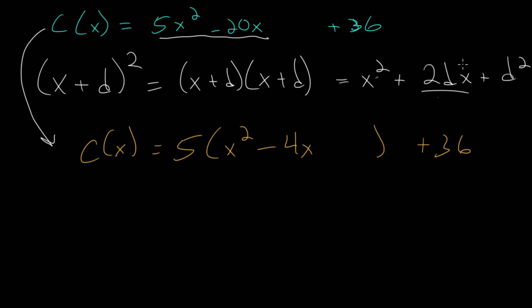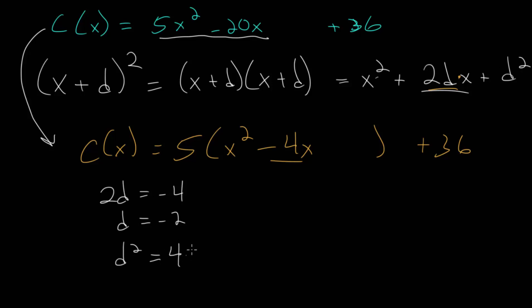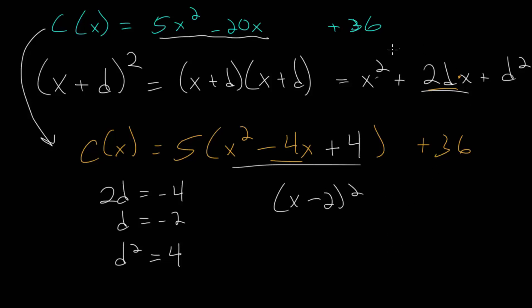Now we can look at the inside and complete the square for this quadratic where the coefficient on x squared is 1. The coefficient on x is twice d. In this case, the coefficient on x is negative 4, meaning twice d equals negative 4, so d equals negative 2. To find the value we need to add to complete the square, we square d. D squared is positive 4, since negative times negative is positive. So if we add 4 inside, we can transform this into (x minus 2) squared.